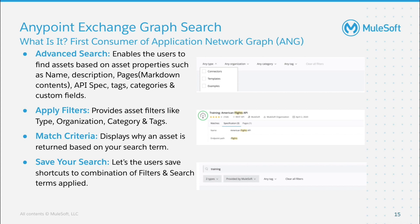Exchange Graph Search is a brand new search model which uses MuleSoft's application network graph. Users benefit by searching and discovering APIs on specific search terms based on several properties of an individual asset like name and description. It offers four filters that can be applied during search: the type of an asset, the organization it belongs to, and most importantly, categories and tags to help users find what they're looking for much faster. Match criteria helps a user understand why an asset is being returned based on their search — it highlights the match term, giving much more visibility within the search page.